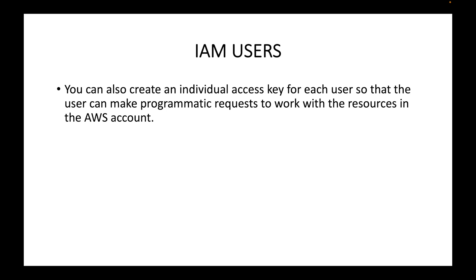In AWS there are different types of access you can give. We can give console access or programmatic access. If you want to access AWS from the console, you use a username and password. If you want to access AWS from the CLI or via programs, you use programmatic access, which involves an access key and secret key for authentication.